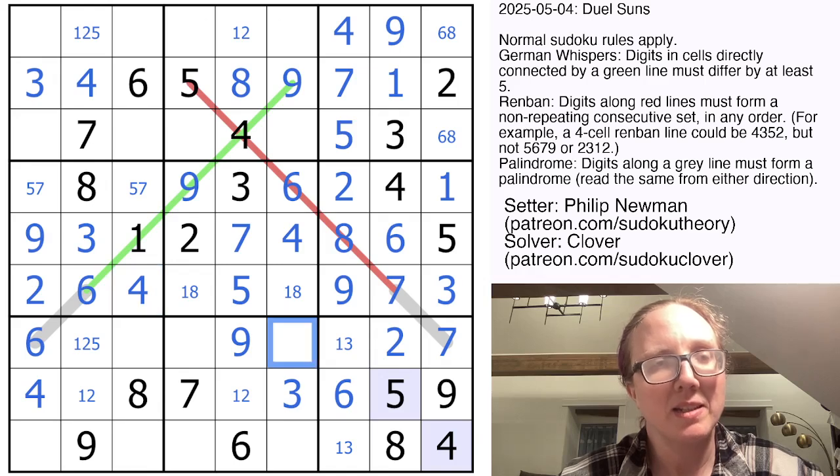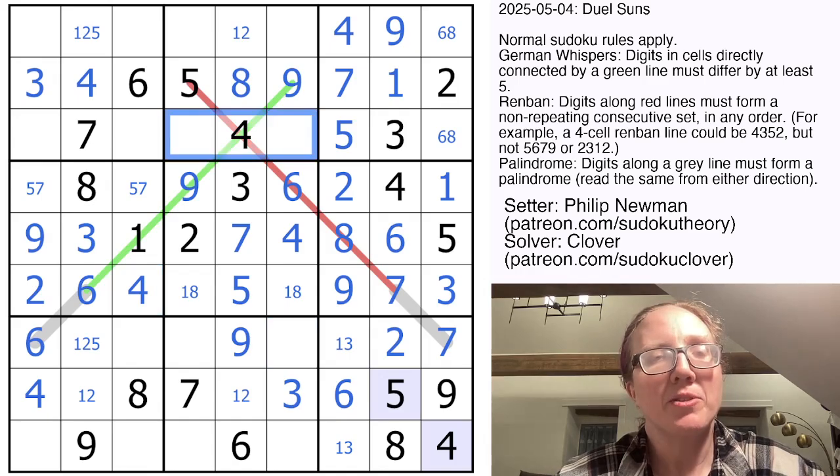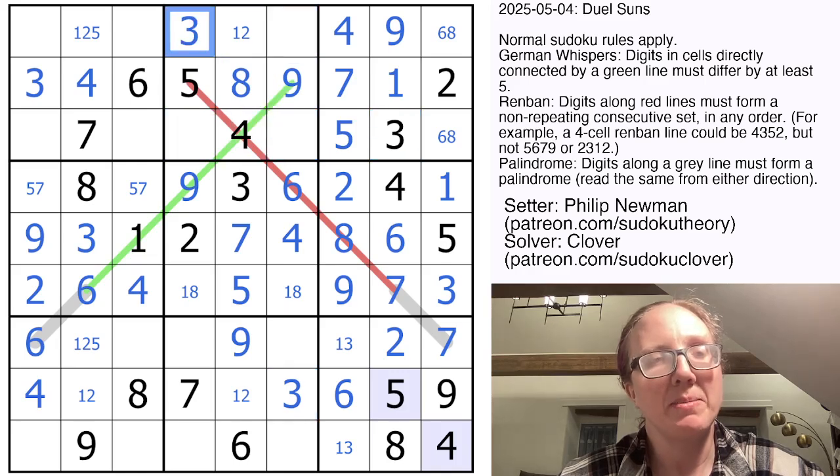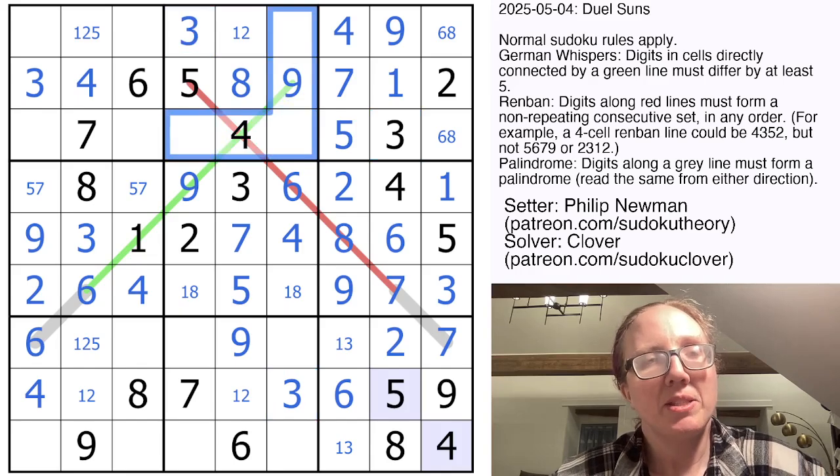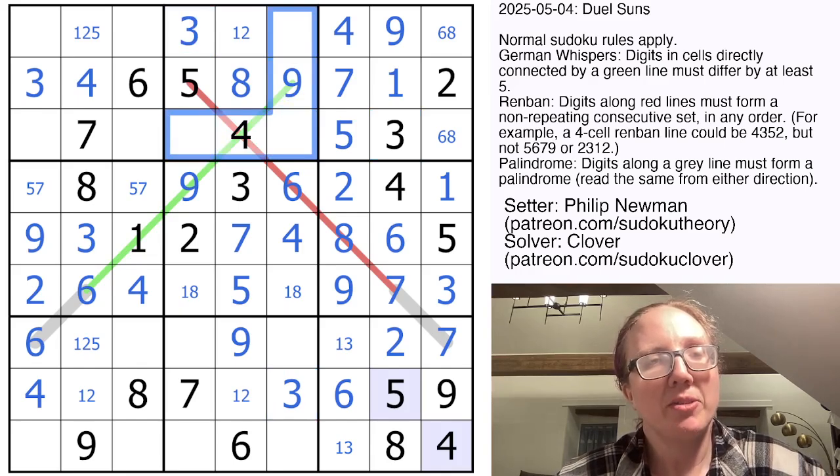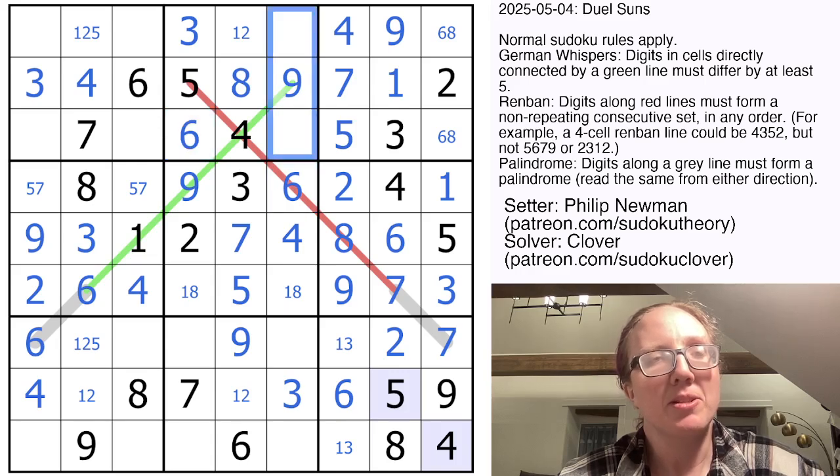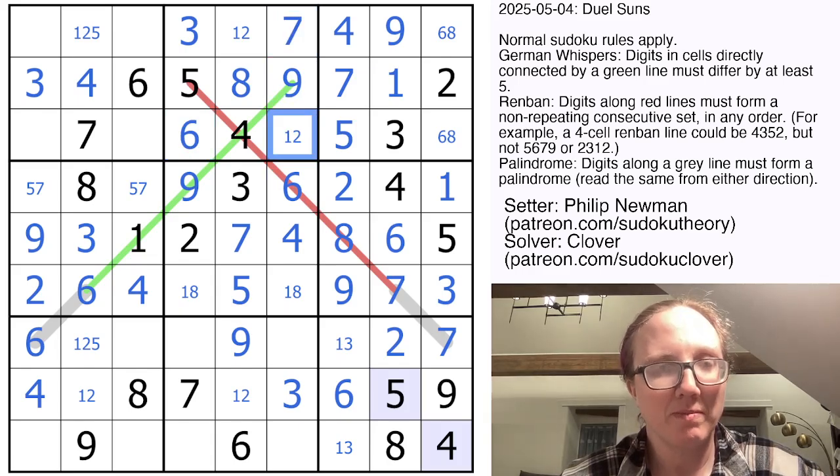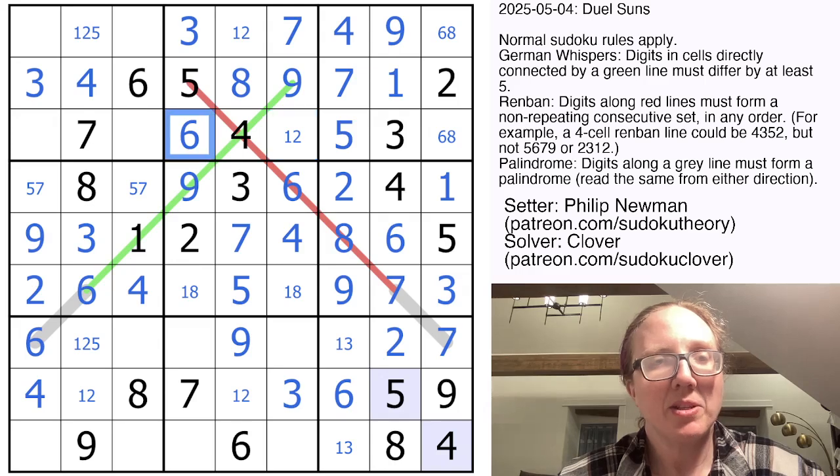Now we need a three in the top center region. Three right here and three right here. That rules three out of those cells. Three is already ruled out there. So this is going to be a hidden three. Now we still need a one, a two, a six, and a seven. The only position for six is there because the six sees the other cells. The only position for seven is there. And so this is going to solve the six, eight.